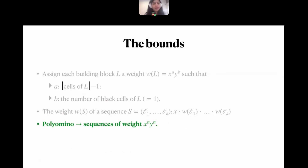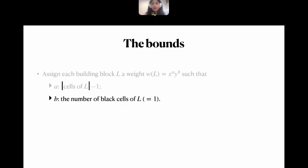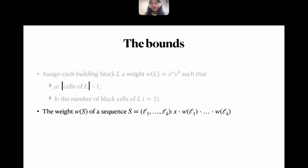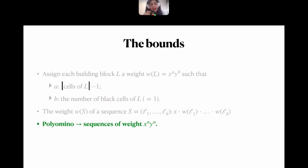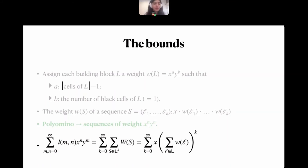The weight of a sequence of building blocks is defined as x times the product of the weights of all building blocks in the sequence. A key fact is that a polyomino of size n maps to a sequence of weight x^n · y^n. With the BFS traversal, assigning each cell one of L₁ through L₅ and computing the sequence weight as defined, the weight of the resulting sequence is x^n · y^n. This holds for all dimensions.